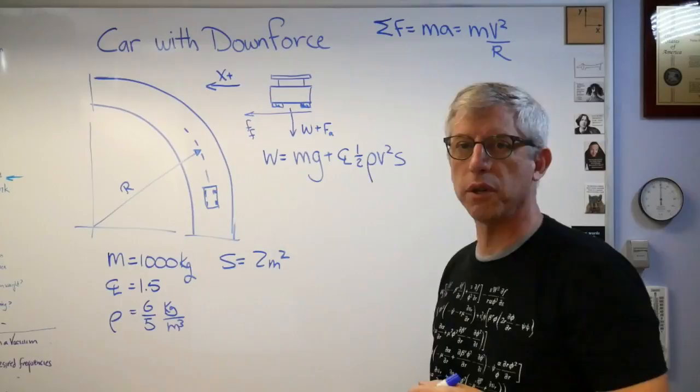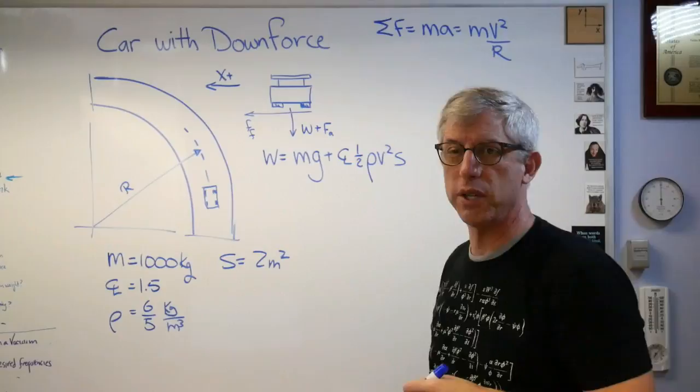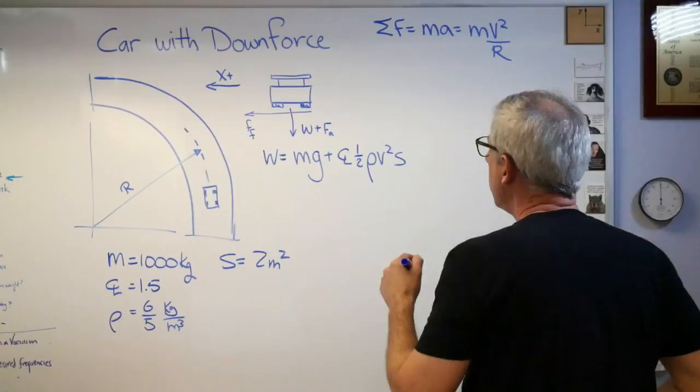If you decide to make positive X this direction, what you're going to find is you're going to get a negative force. The force is going to be in the negative direction, which means your acceleration is going to be in the negative direction. You'll have to add a minus sign in there to get it to work out. It's easier if you do it this way, but physics doesn't care what coordinate system you use, right?